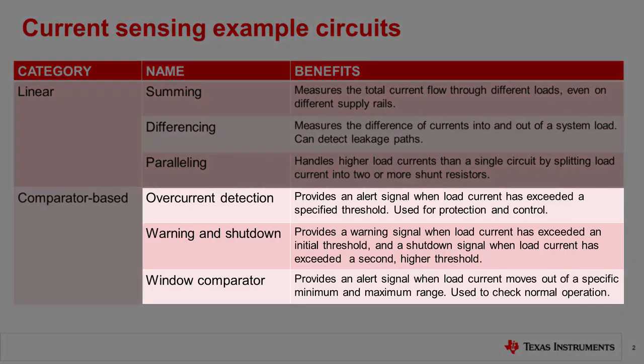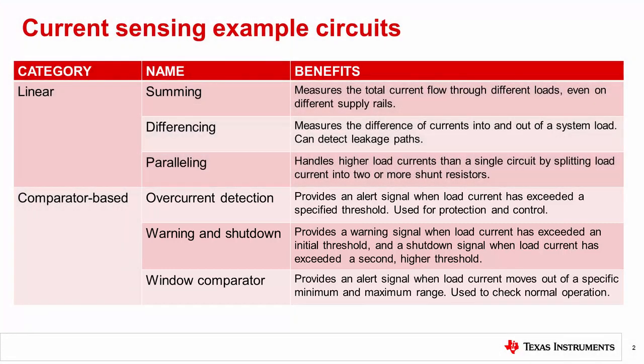The overcurrent detection, warning and shutdown, and window comparator circuits make up the comparator based category and are used to provide alert signals under specific load current conditions so that system power can be turned off or other decisions can be made to ensure safe and reliable operation. The benefits of each are summarized here, and I'll give more details as we explore each one.